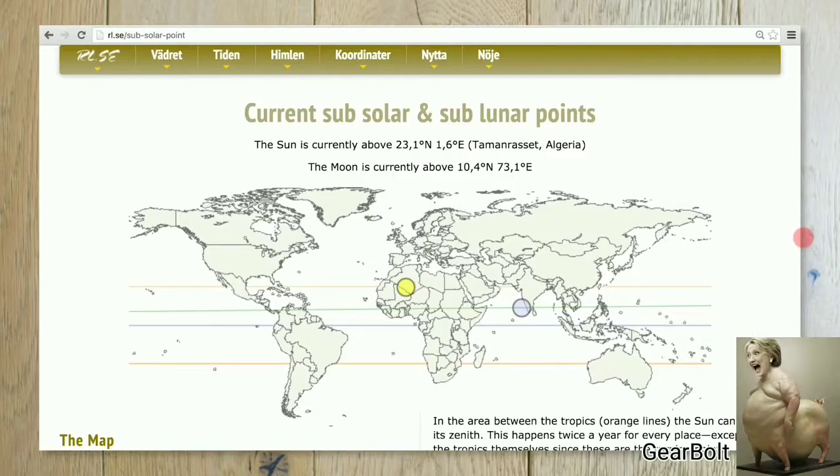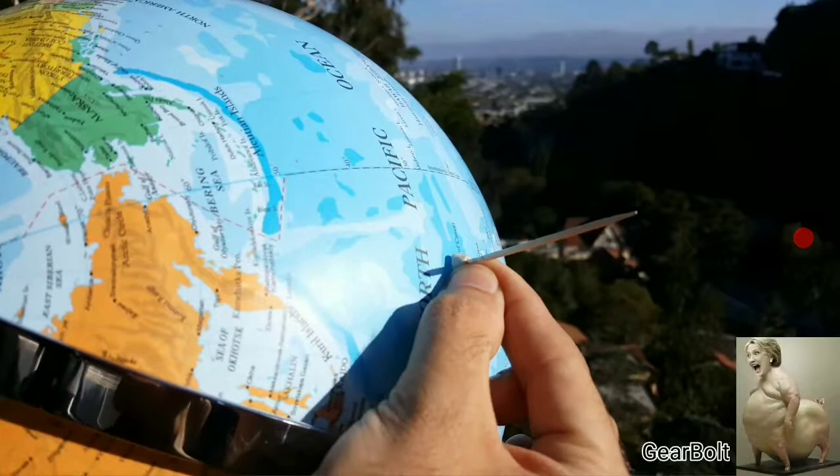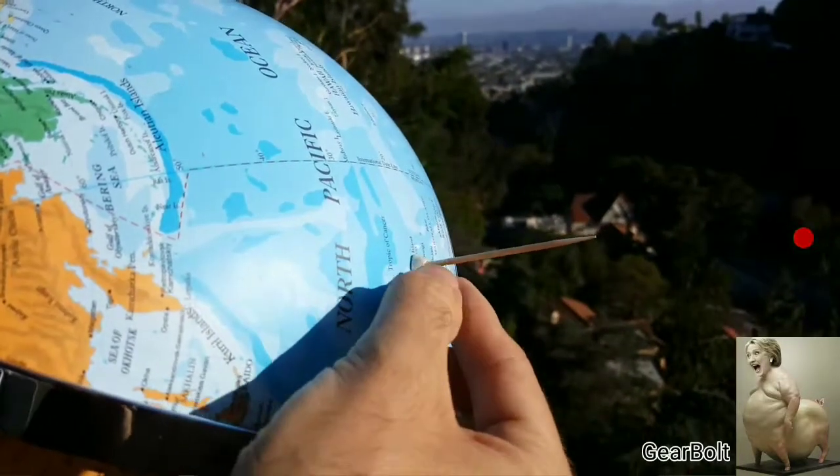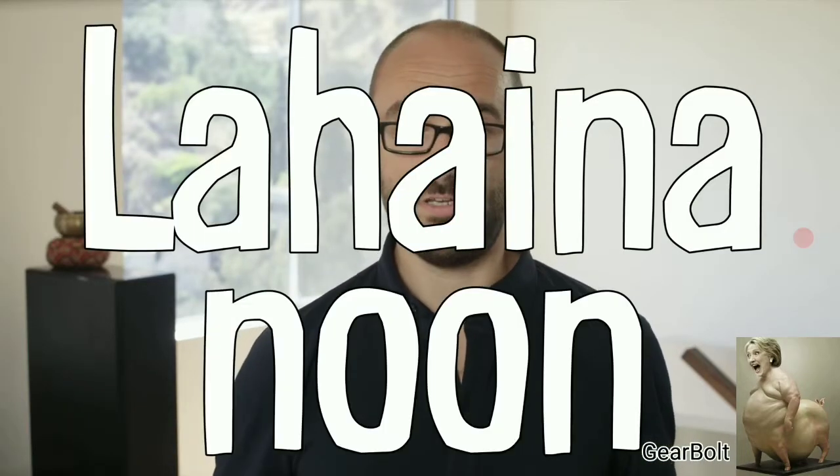Unless you're on the subsolar point. The subsolar point is the point on Earth's surface directly below the sun. It's always somewhere. You can check its current location online. Links, as always, in the description. On the subsolar point, shadows fall straight down so they can easily disappear. Twice a year, the subsolar point crosses over Hawaii, the only place in the U.S. where it hits land.